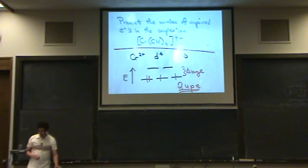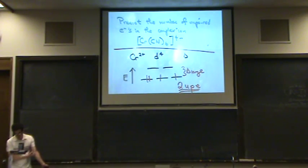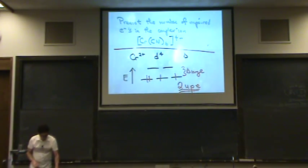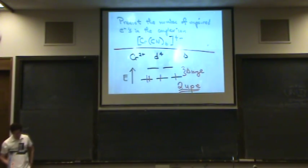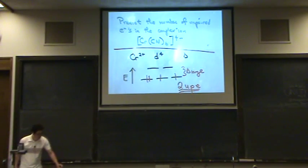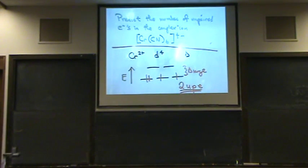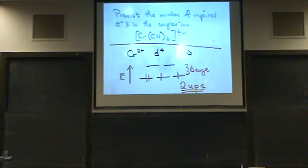It's still paramagnetic, low spin sort of complex, but it's 2 unpaired electrons.